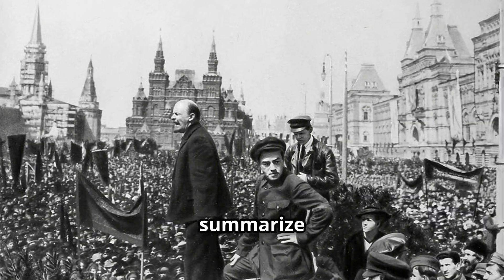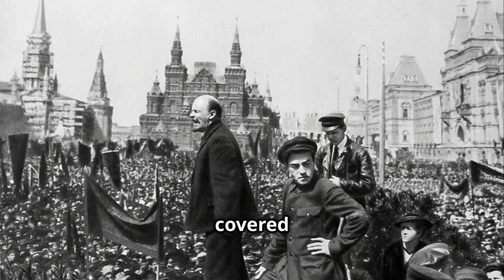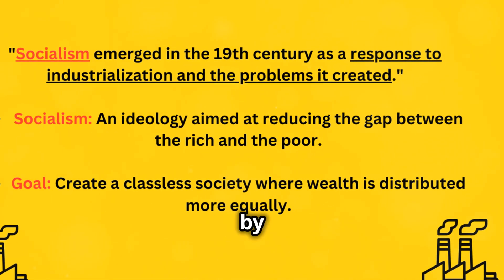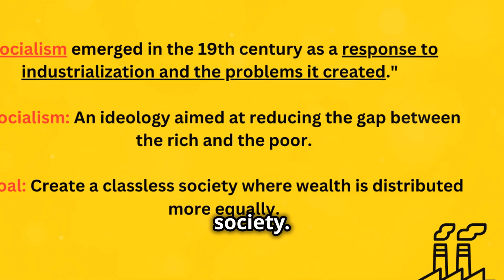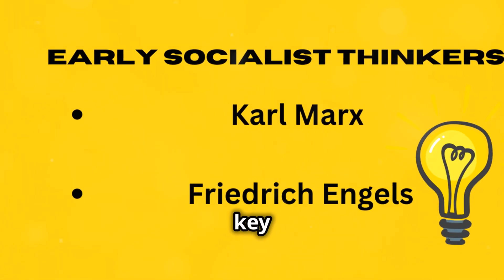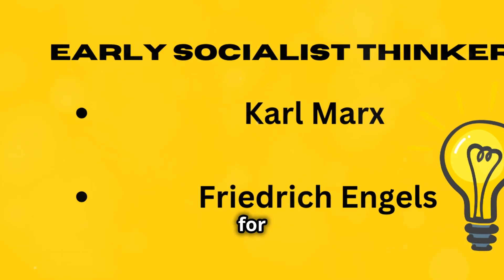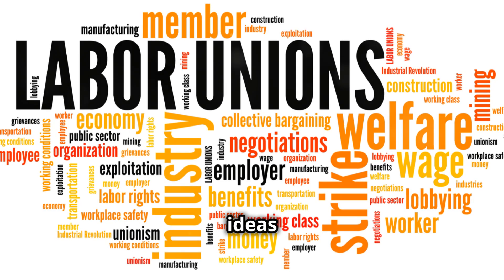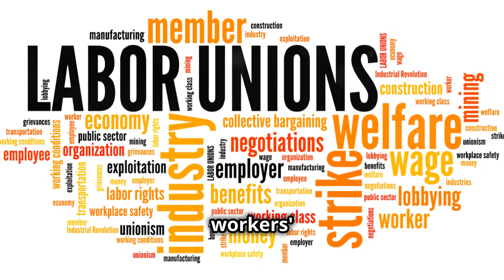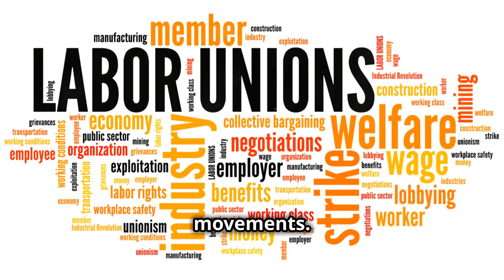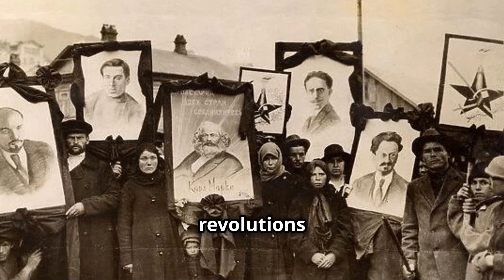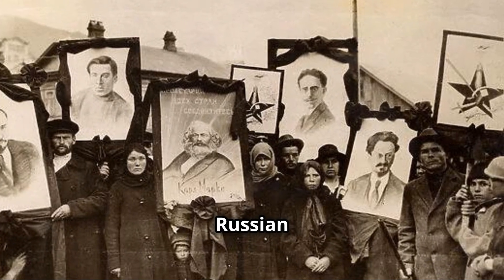Let's quickly summarize what we covered. Socialism aimed to reduce inequality by creating a classless society. Karl Marx and Friedrich Engels were key thinkers who advocated for the workers. Socialist ideas spread across Europe, leading to reforms and workers' rights movements. Socialism's influence was felt in revolutions like the Russian Revolution.